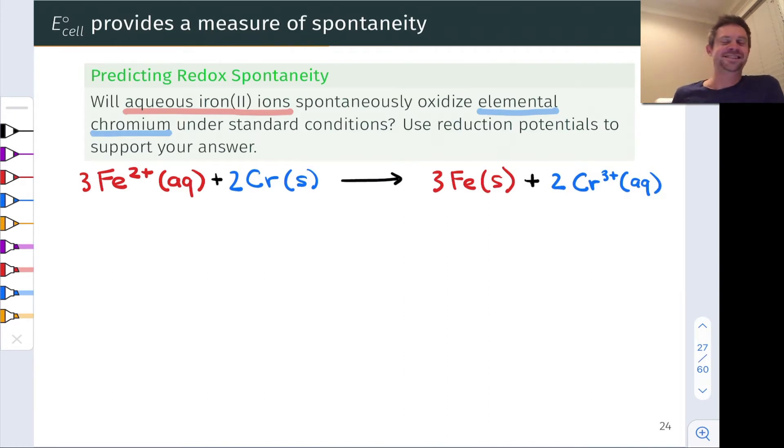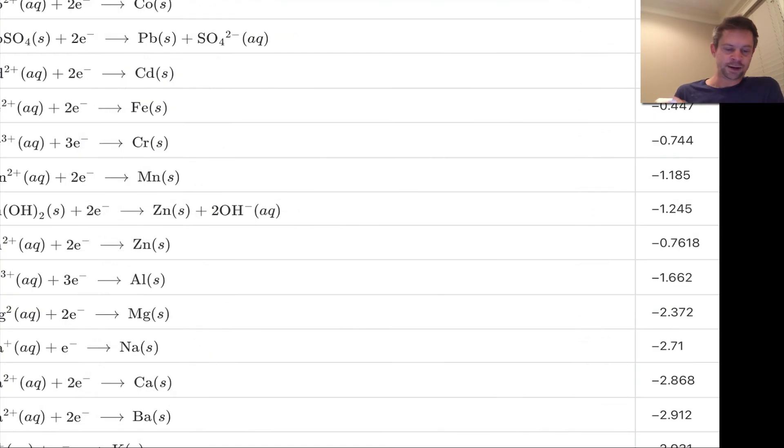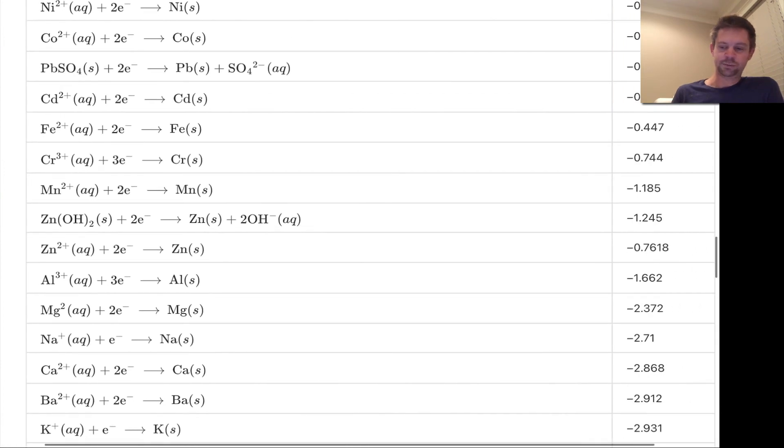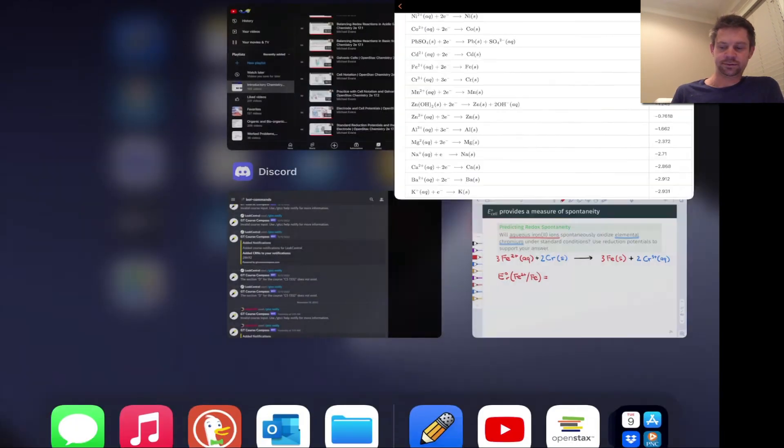Now the question remains, is this a spontaneous redox reaction or not? Well, let's start with the reduction potential of Fe²⁺, where the product is Fe. Back to the table, the potential there was -0.447 volts.